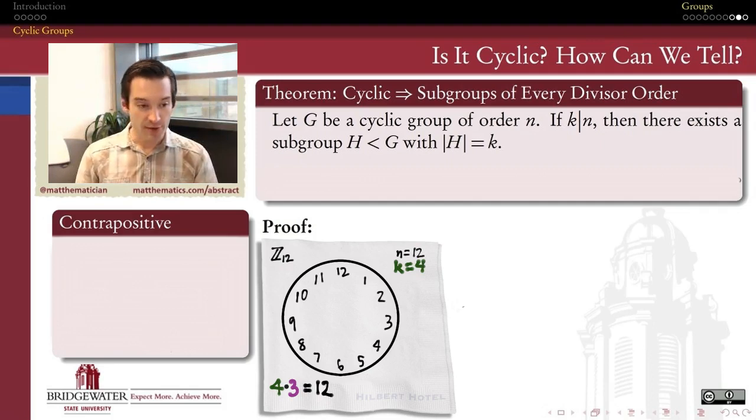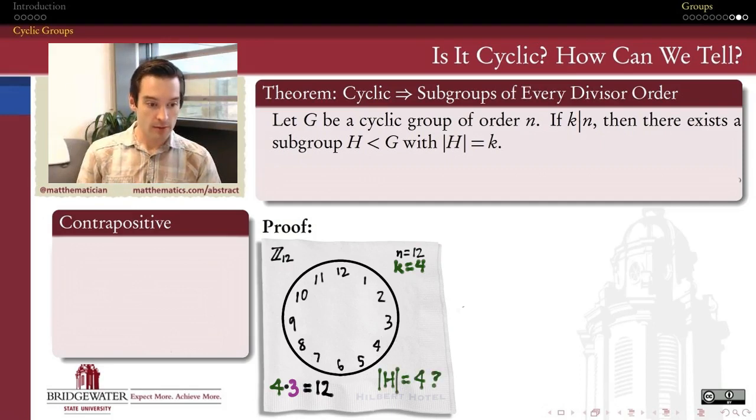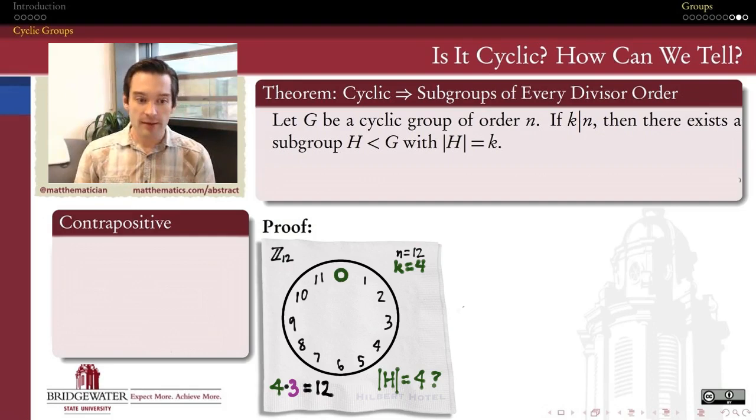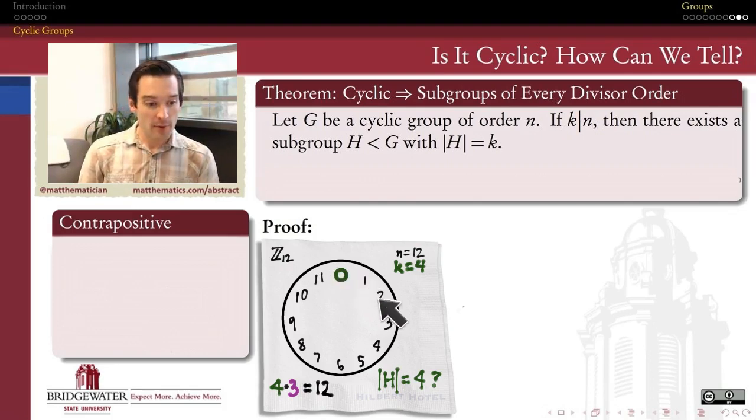And so, then, the question is within this group of integers with addition mod 12, how do I find a subgroup whose order is equal to the divisor that I chose? How do I find an order 4 subgroup inside of my clock? If I'm looking for a subgroup of order 4, I wonder if I could do that by finding an element in this group that has order 4. We know that that's possible, because in a cyclic group, the order of any element is also a divisor of the order of the group. So, if I can find an element of order 4, then it should generate a subgroup of order 4, if I look at all of its powers.